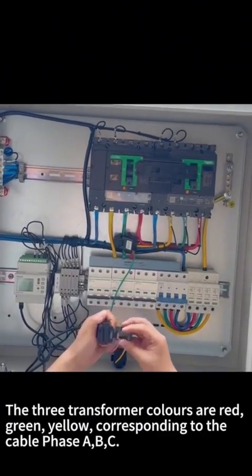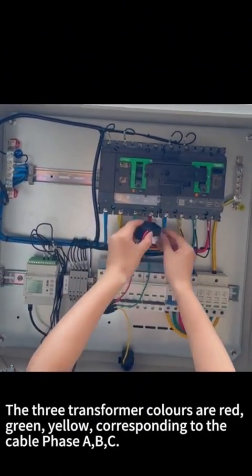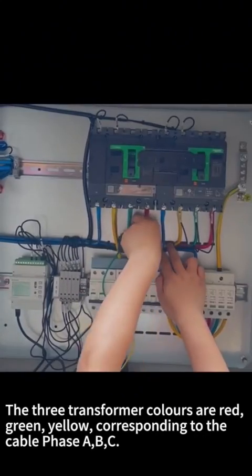The three transformer colors are red, green, yellow, corresponding to the cable phase A, B, C.